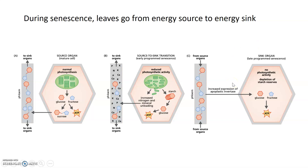Ultimately those leaves, filled with sugars and nutrients, are abscised from the plant in a regulated manner. All of those nutrients now stored in the sink of the leaves can enter back into the energy cycle and provide sugars and nutrients for the next generation of plants.